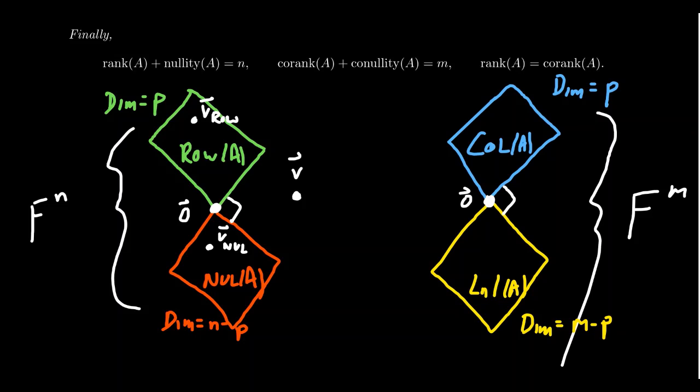All right. So if you put these two pieces together, if you add them, V-rho plus V-null, you get back V. Now let's say that V maps over to some vector B over here in the column space. It'll live inside the column space.